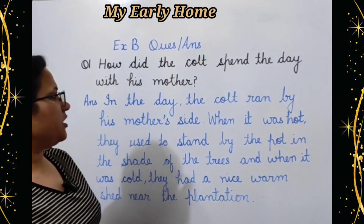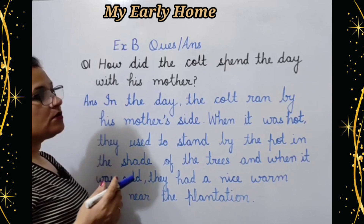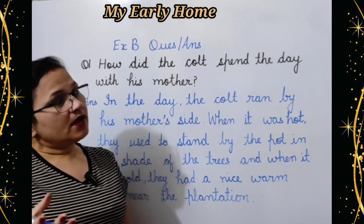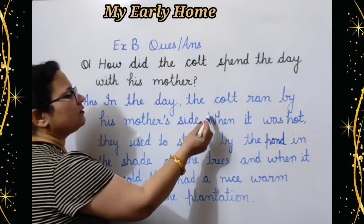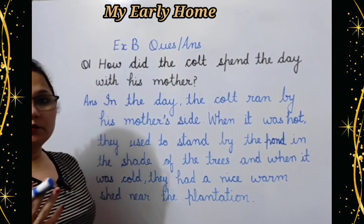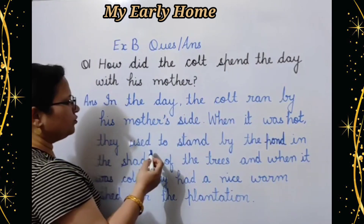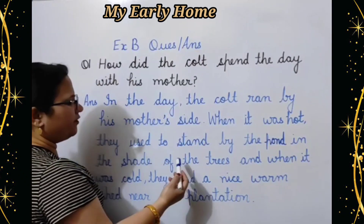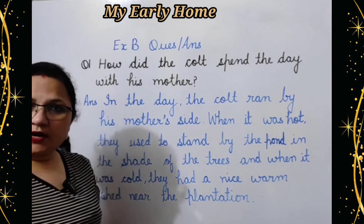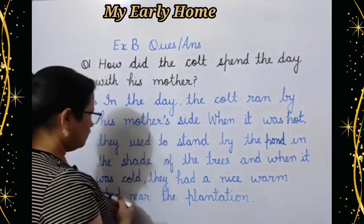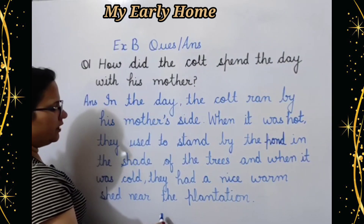Next we are going to do Exercise B — question answers. Question number one: How did the colt spend the day with his mother? Colt yani horse ka bachda apni maa ke saath din kaise bitata tha? Answer: In the day the colt ran by his mother's side. When it was hot, they used to stand by the pond in the shade of the trees.